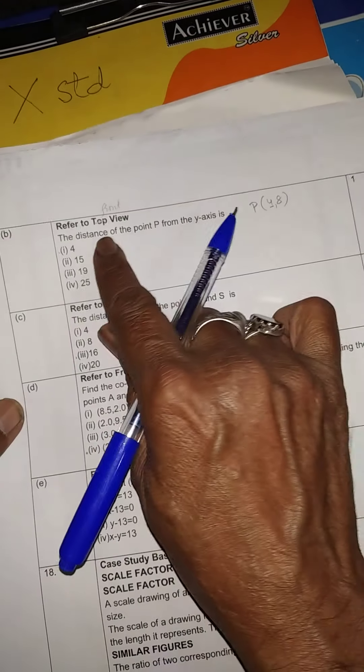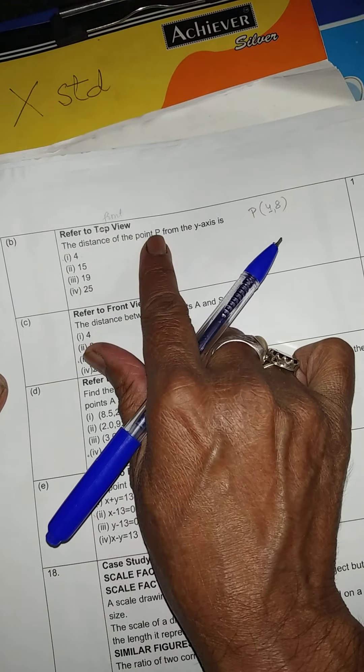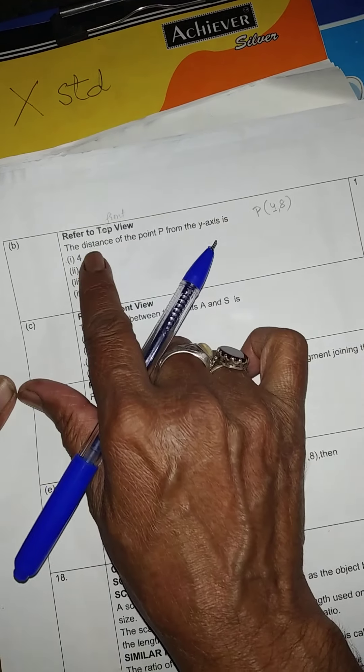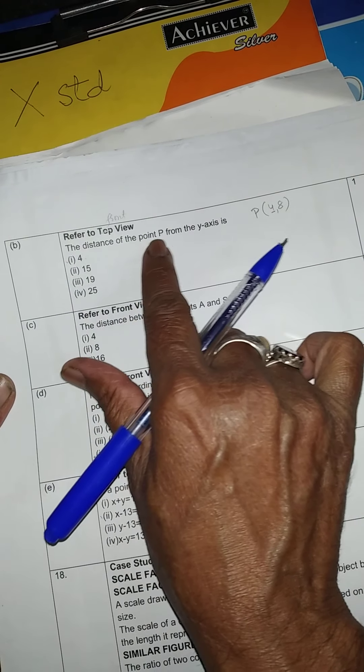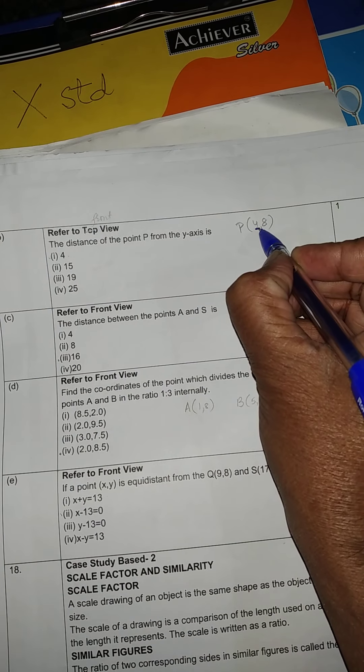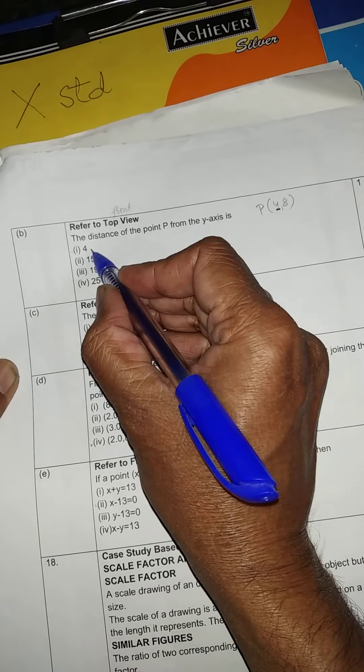Now, let us see what is in part B. He is asking the distance of the point P from the y-axis is how much? If they are asking what is the distance of the point from y-axis, you see the x coordinate. What is x coordinate? 4. Answer will be 4.